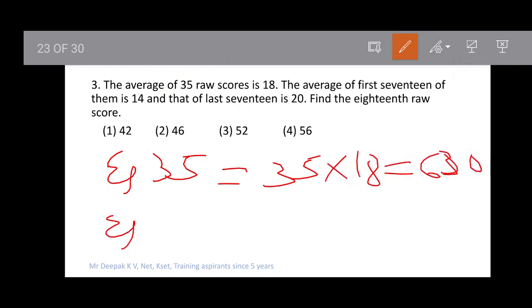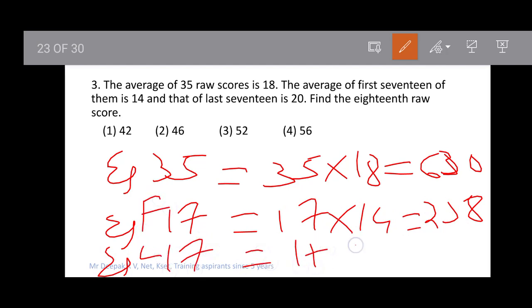The sum of the first 17 is 14×17 = 238. The sum of the last 17 is 20×17 = 340.